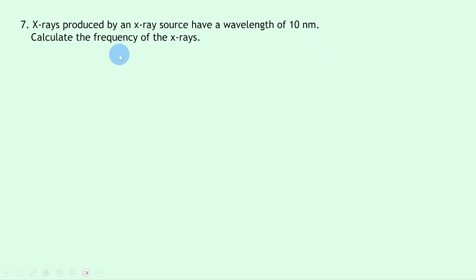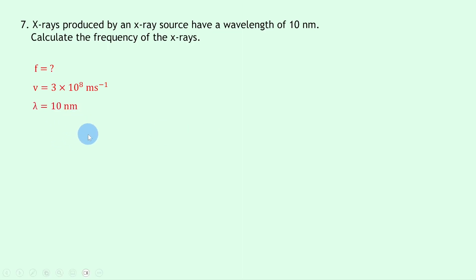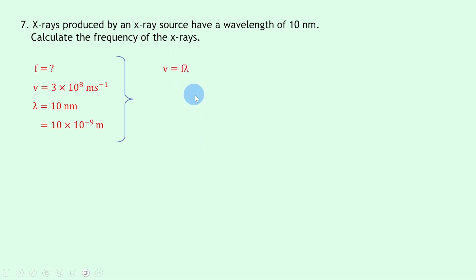Question seven says: x-rays produced by an x-ray source have a wavelength of 10 nanometers. Calculate the frequency of the x-rays. We're trying to find the frequency f; the speed v of x-rays is 3 × 10⁸ meters per second since x-rays are members of the electromagnetic spectrum; and the wavelength lambda is 10 nanometers, i.e. 10 × 10⁻⁹ meters. Using v = f·λ and rearranging for f: f = v / λ. Substituting gives 3 × 10⁸ divided by 10 × 10⁻⁹, which gives 3 × 10¹⁶ Hz.